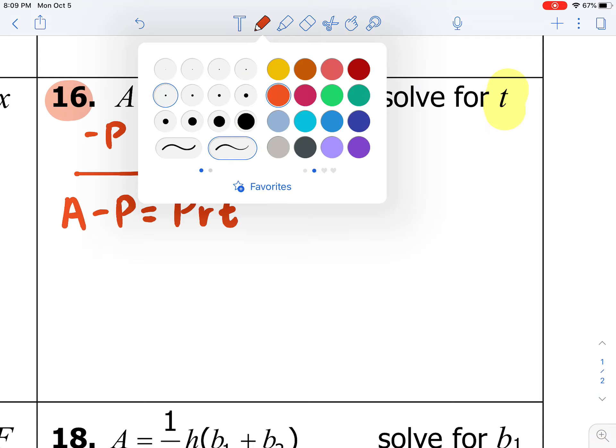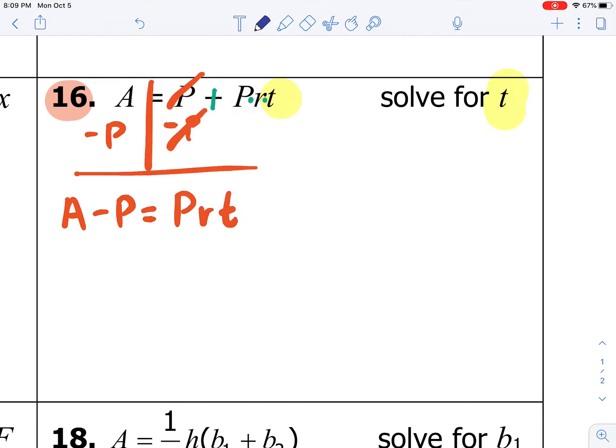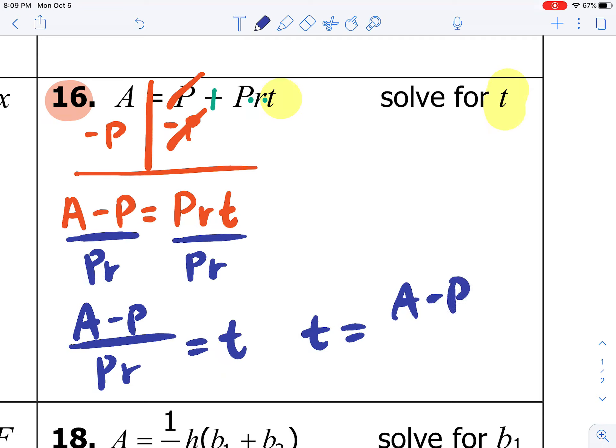So again, P and R and t are all being multiplied times one another. So to finish solving for t, we need to divide both sides by PR. So A minus P over PR equals t, or t equals A minus P over PR. So we've taken our former equation, and we have resolved it for t. t is now by itself.